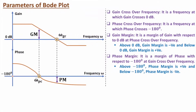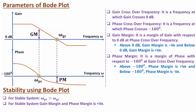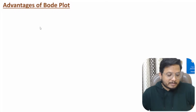The relation between phase crossover frequency and gain crossover frequency explains the stability of the system. For stability, the phase crossover frequency must be greater than the gain crossover frequency. If the phase crossover frequency is lower, the system is unstable. For a stable system, both gain margin and phase margin will be positive.